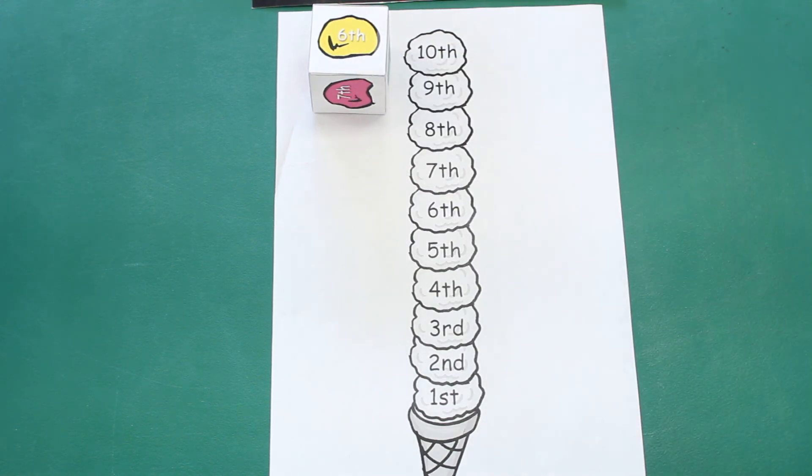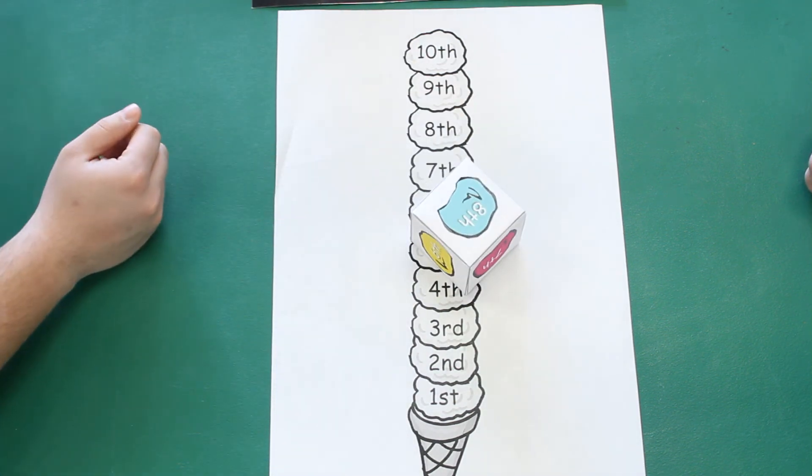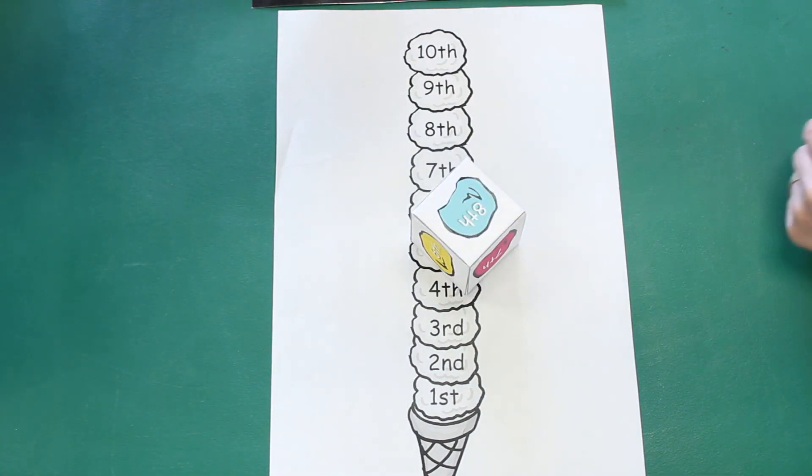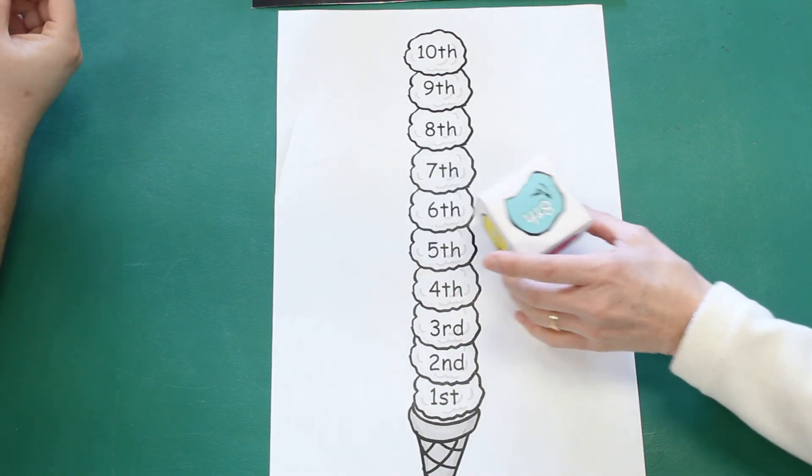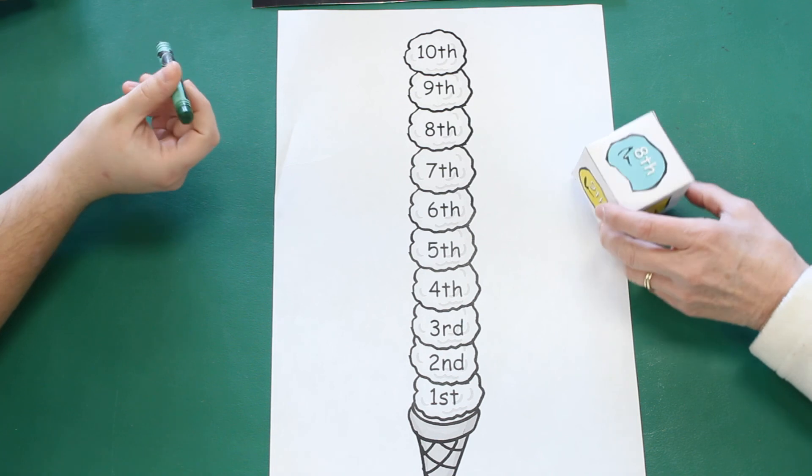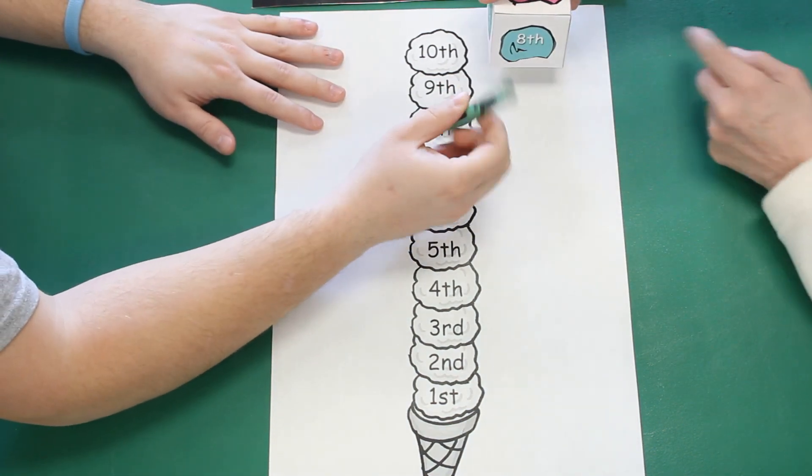All right, so let's let Ethan roll first. Ethan's going to roll the dice. Ethan, what scoop of ice cream are you going to color? I'm going to color the eighth scoop and it's going to be green. Ethan's going to color the eighth scoop of ice cream green.